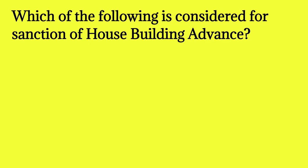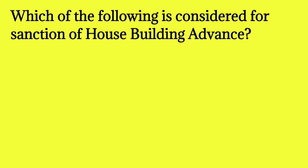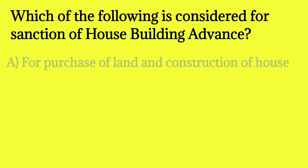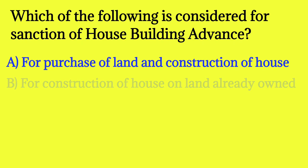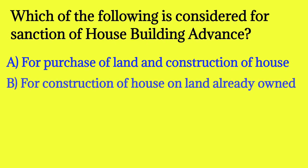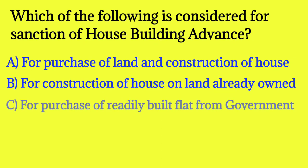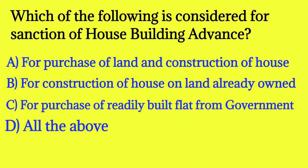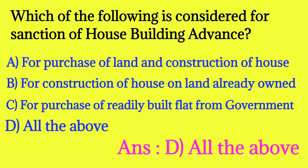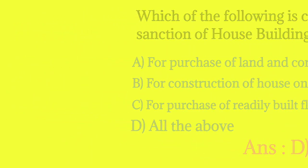Which of the following is considered for sanction of House Building Advance? Option A: for purchase of land and construction of house. Option B: for construction of house on land already owned. Option C: for purchase of a readily built flat from government. Option D: all of the above. The answer is all of the above.